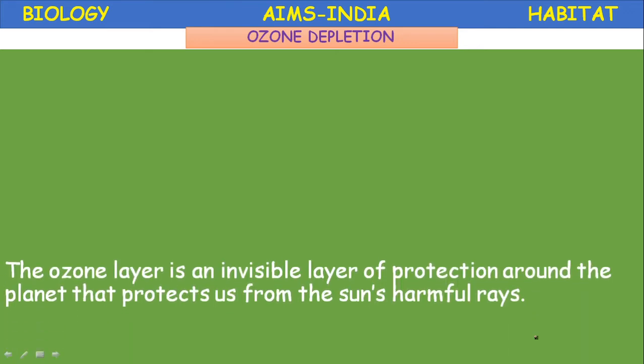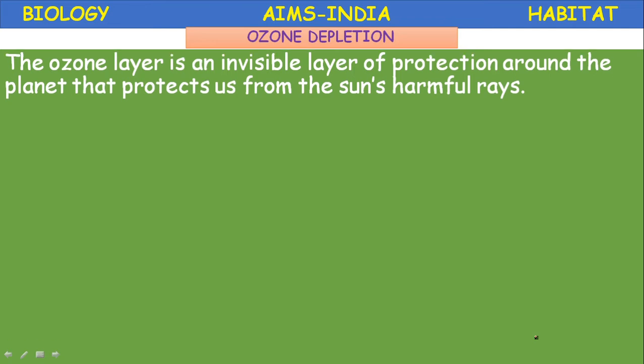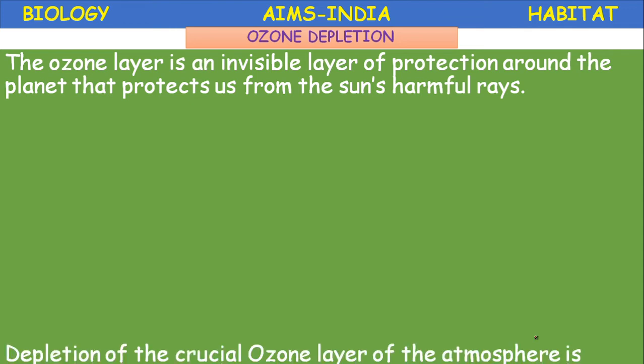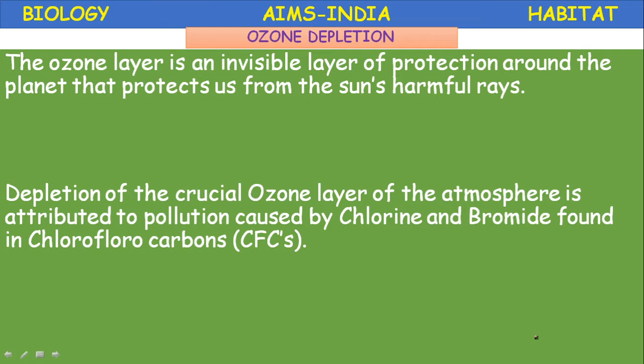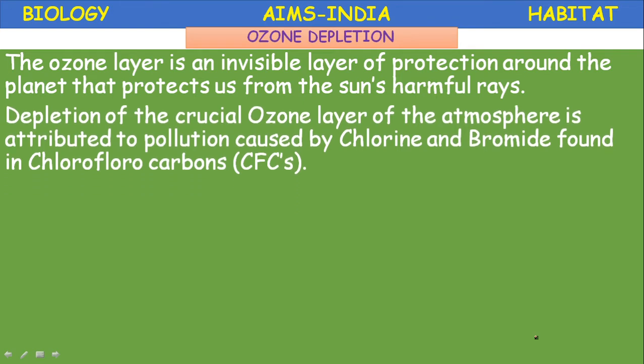Next, ozone depletion — also a major problem. The ozone layer is an invisible layer of protection around the planet that protects us from the sun's harmful rays. The depletion of the ozone layer is attributed to pollution caused by chlorine and bromine found in the form of chlorofluorocarbons, or CFCs. CFCs denature or destroy ozone (O₃). During depletion, ozone is converted to oxygen. The ozone layer is present in the stratosphere region of the atmosphere.